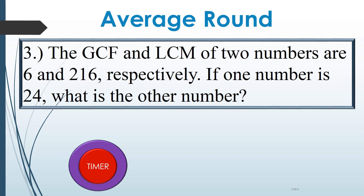The GCF and LCM of 2 numbers are 6 and 216, respectively. If one number is 24, what is the other number? Go!